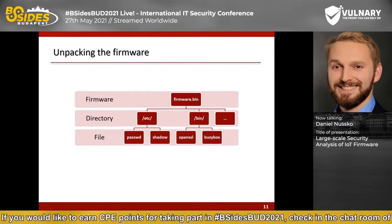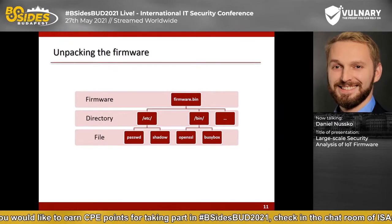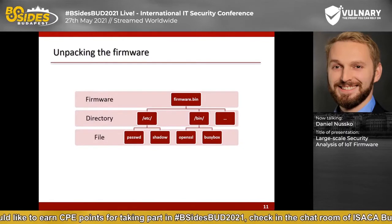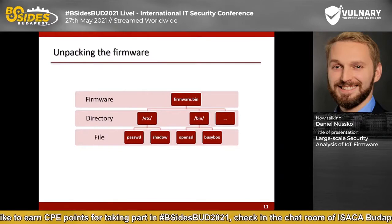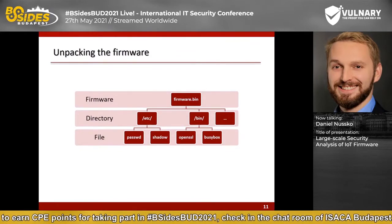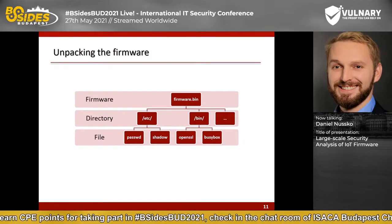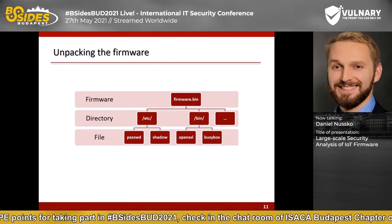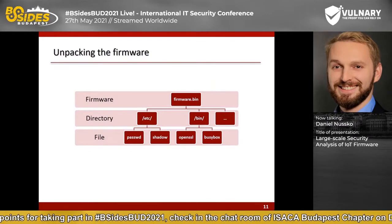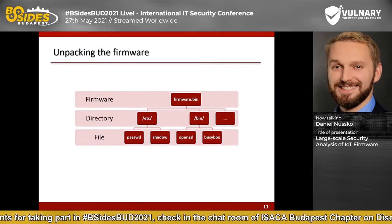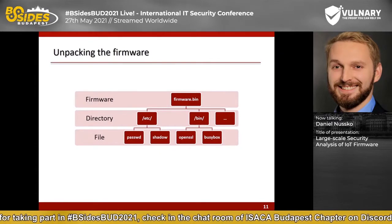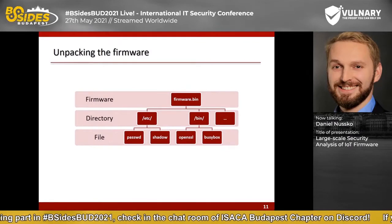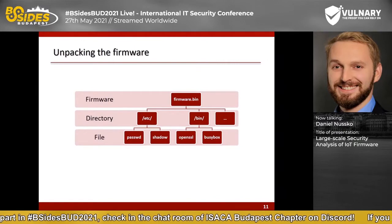Now let's talk about the unpacking of firmware. Most of the analyzed devices have a full operating system with a kernel, user space, and file system. Firmware files are often packed in multiple layers and different file formats. The challenge is to handle a wide range of file and archive formats and unpack them in an automated way, layer by layer. Manufacturers often provide firmware in an archive file, and after unpacking that you often get a binary blob. To extract files from this blob, we use file carving — searching for common file signatures and magic bytes within the binary blob to extract files.